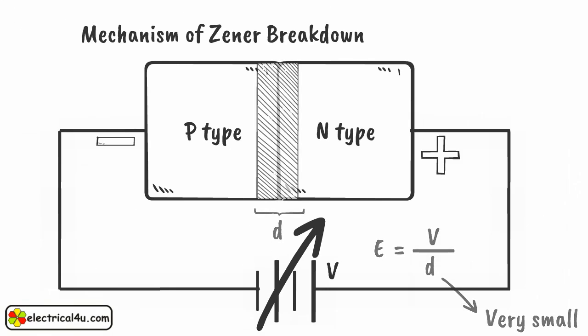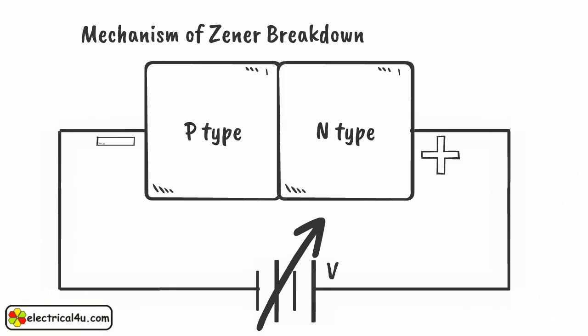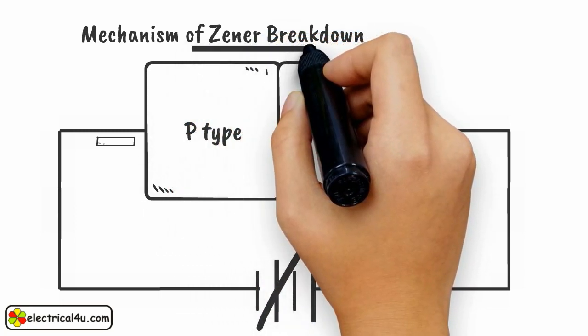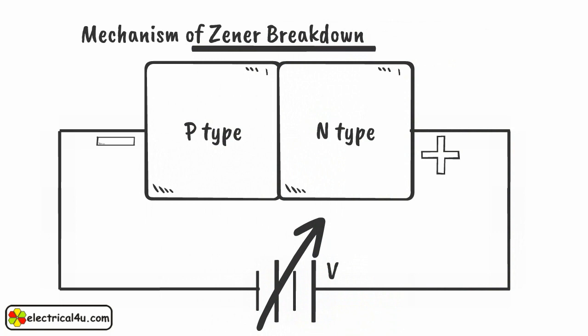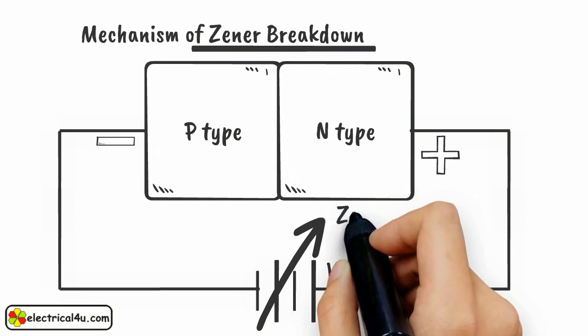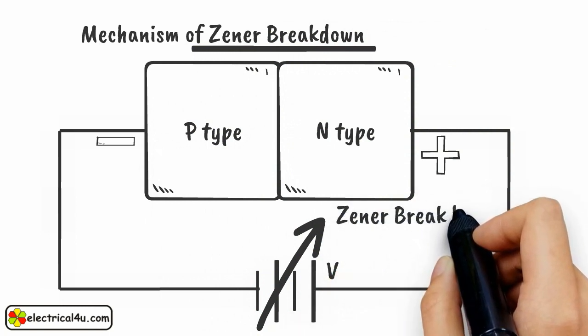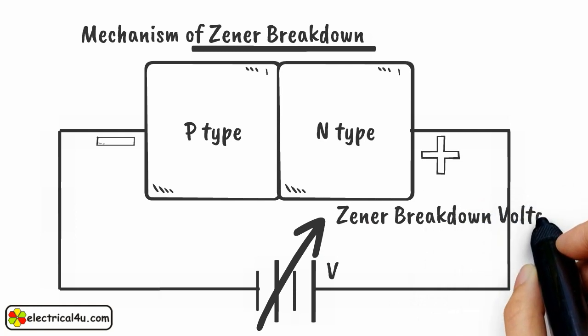As a result, the reverse barrier of the diode is broken down. This type of breakdown is called Zener breakdown and the voltage at which this breakdown occurs is called Zener breakdown voltage or in short, Zener voltage.